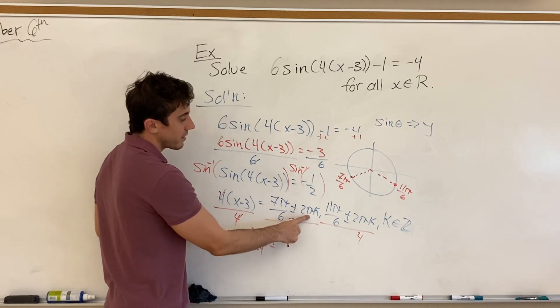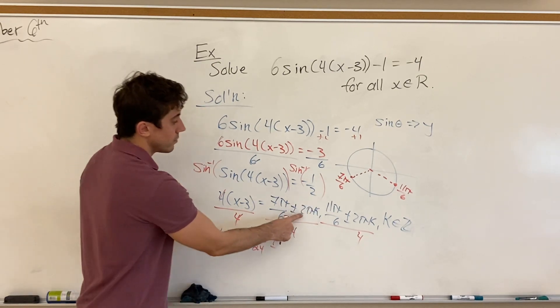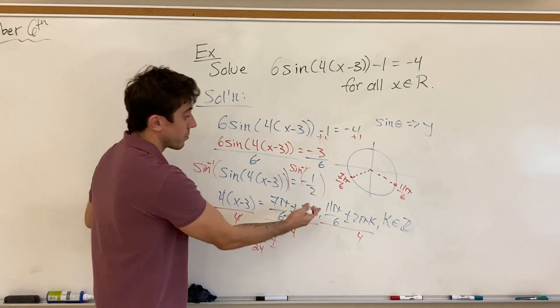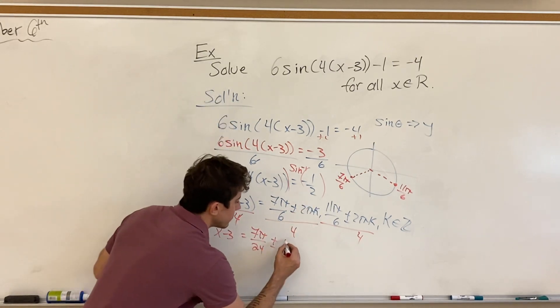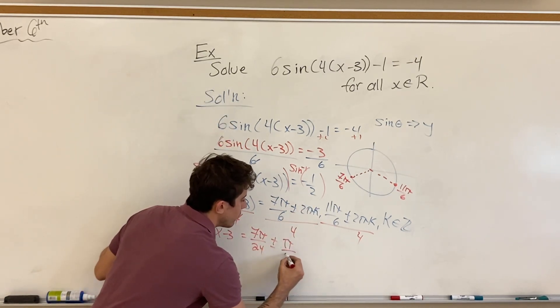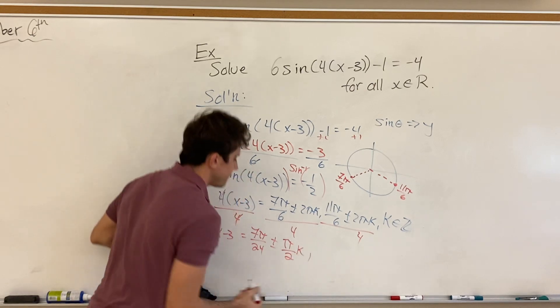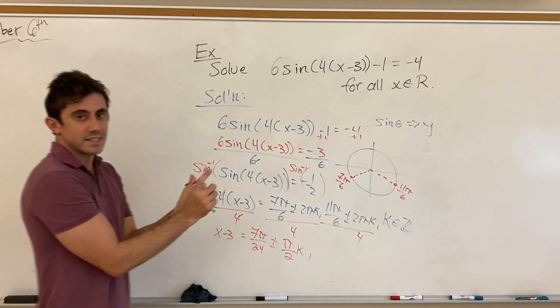Now, 2 pi k over 4 reduces to 1 over 2, right? Or pi over 2 times k. So we'll have pi over 2 times k for our first, let's say, set of solutions.